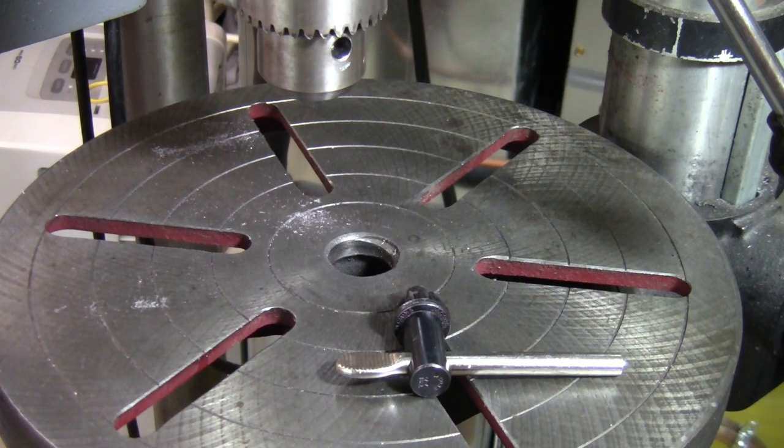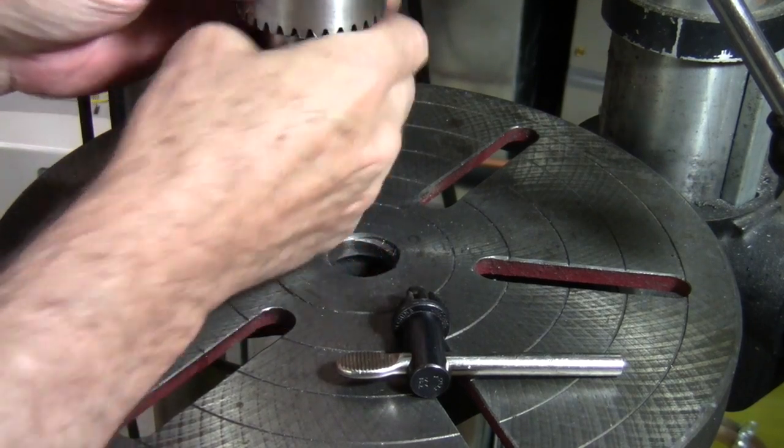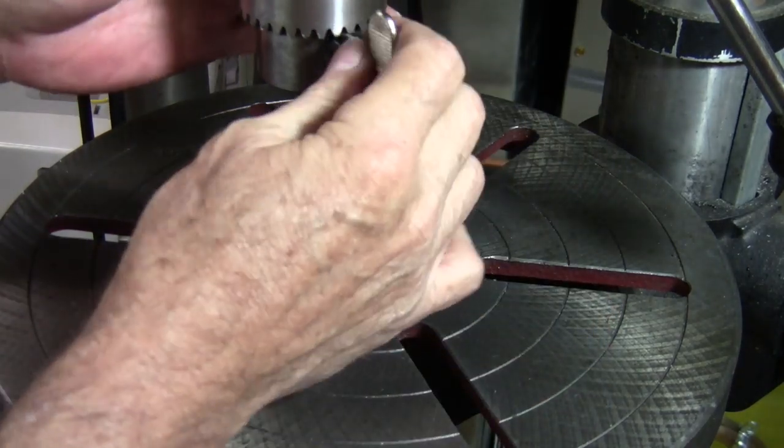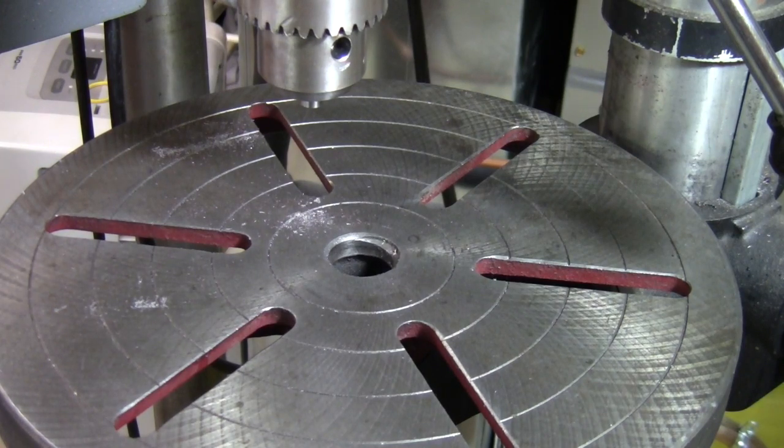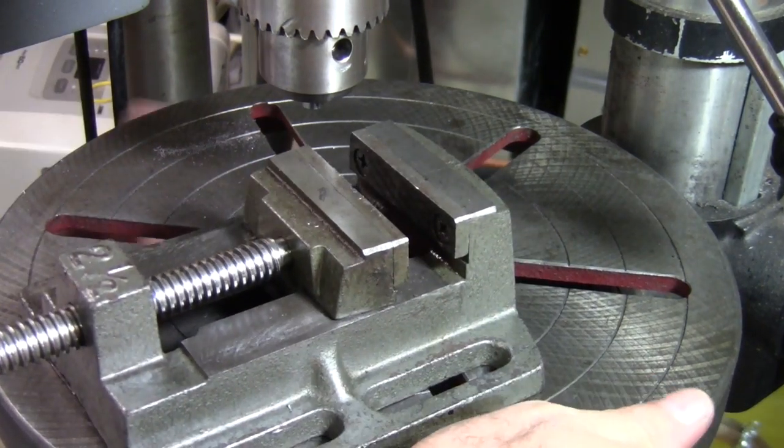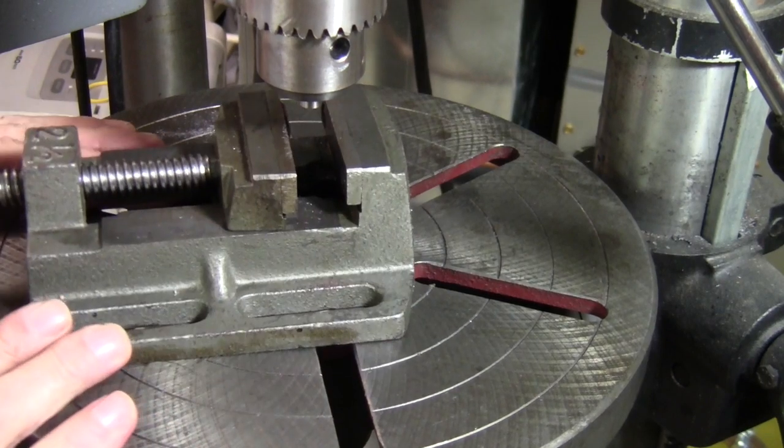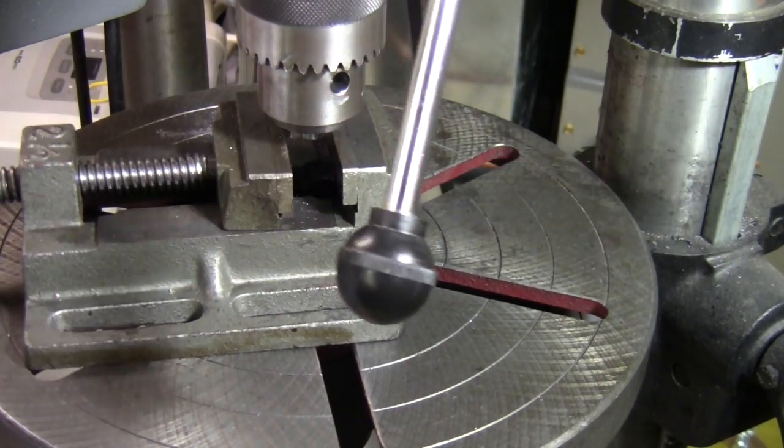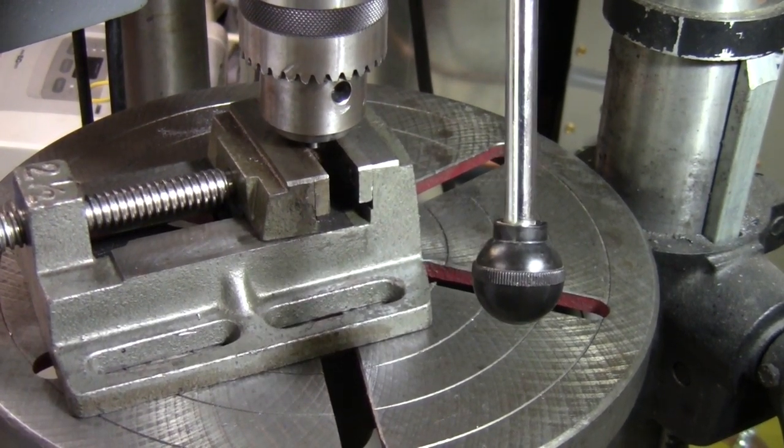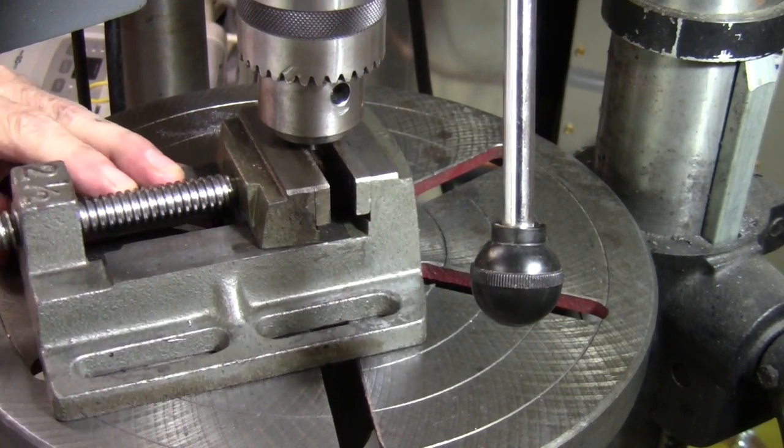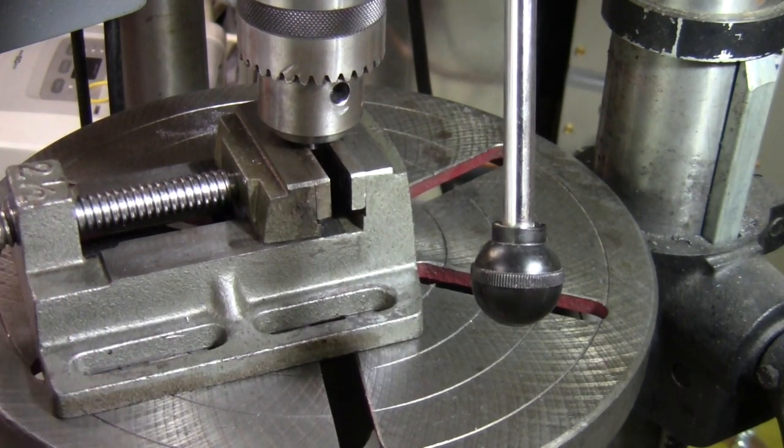So I'm gonna stick it back in the chuck, leave about half of it hanging out, tighten it down. Lower my table just a little bit. I'm going to do the same deal with this as I did. Lower this down in here, lock my quill down so it stays there. I'm going to tighten this up in the center of the vise.